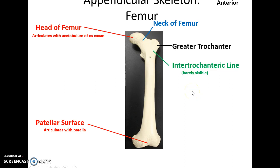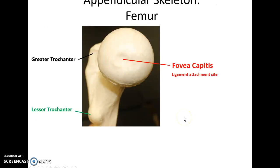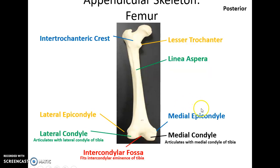The femur is the thigh bone, the largest bone of the body. The head of the femur, this big rounded knob, fits into the acetabulum to form the hip joint. This is followed by the neck of the femur. You have a large rough area sticking out laterally called the greater trochanter, and then a faint line called the intertrochanteric line. There's a little depression in the head of the femur called the fovea capitis. There's also a lesser trochanter. On the posterior view you can see the lesser trochanter much easier. There's bony tissue connecting the greater trochanter to the lesser called the intertrochanteric crest. This pointy line going down the length of the shaft is called the linea aspera.